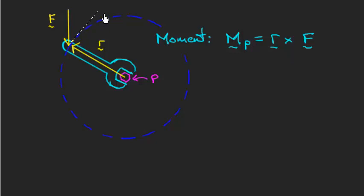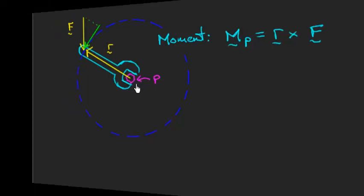and it pulls out a component that's perpendicular to R. This green vector is the component of F that's perpendicular to R, and it's this part that contributes to the moment. It's this component of F that's causing a twisting action about point P.